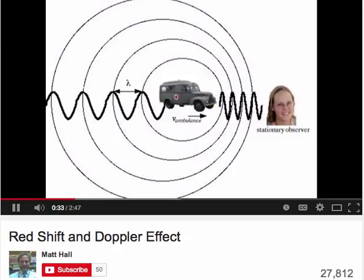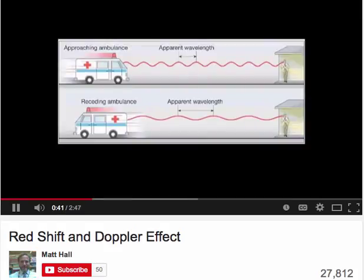This can commonly be seen when a vehicle producing a siren or horn approaches, passes, and moves away from an observer. For example, if you were standing on a street and an ambulance approached and passed you — as the ambulance approached, the sound waves produced in front of the siren would be compressed together, giving a higher frequency or high pitch sound.